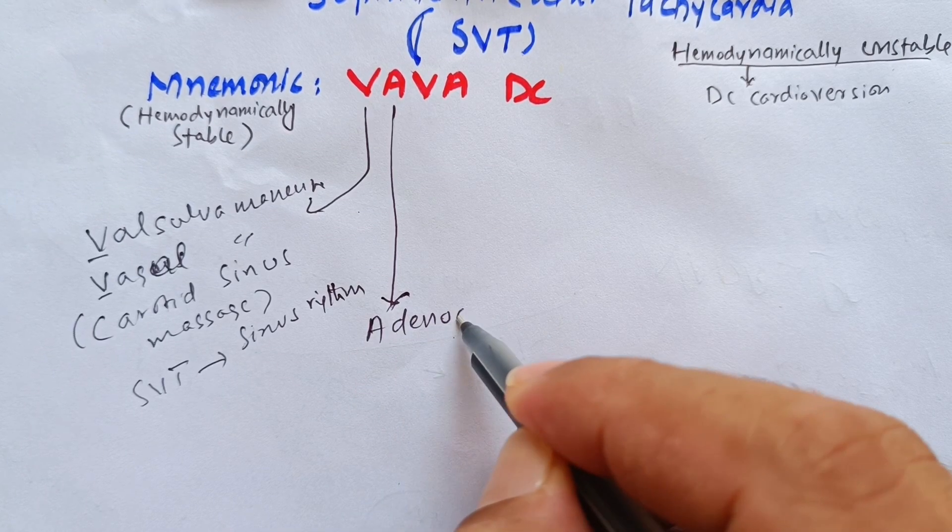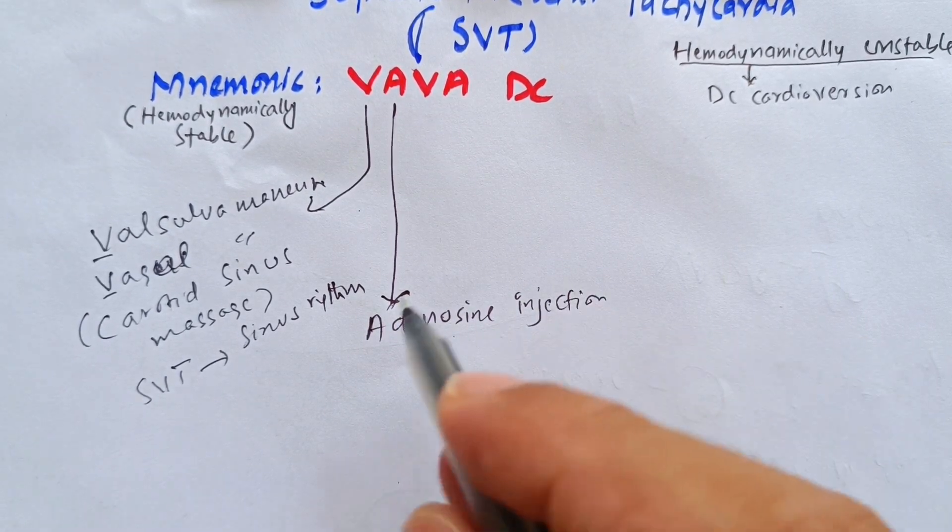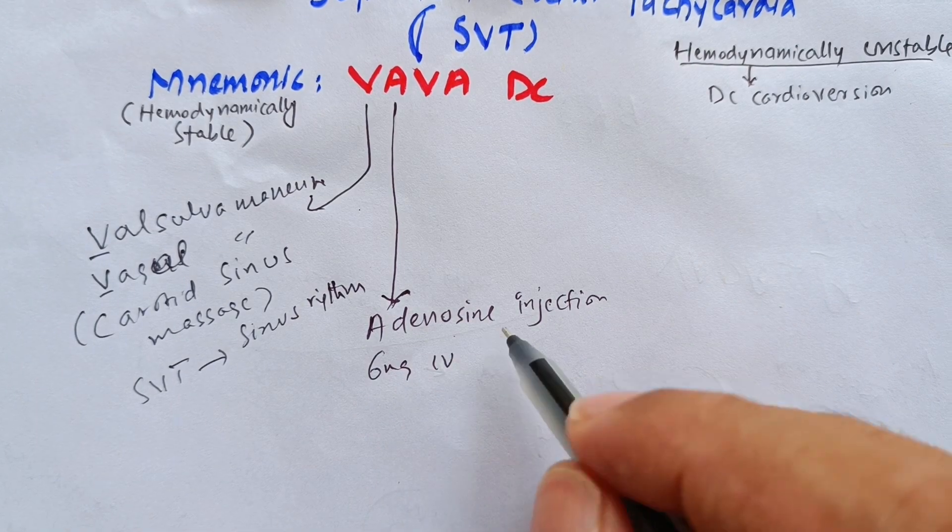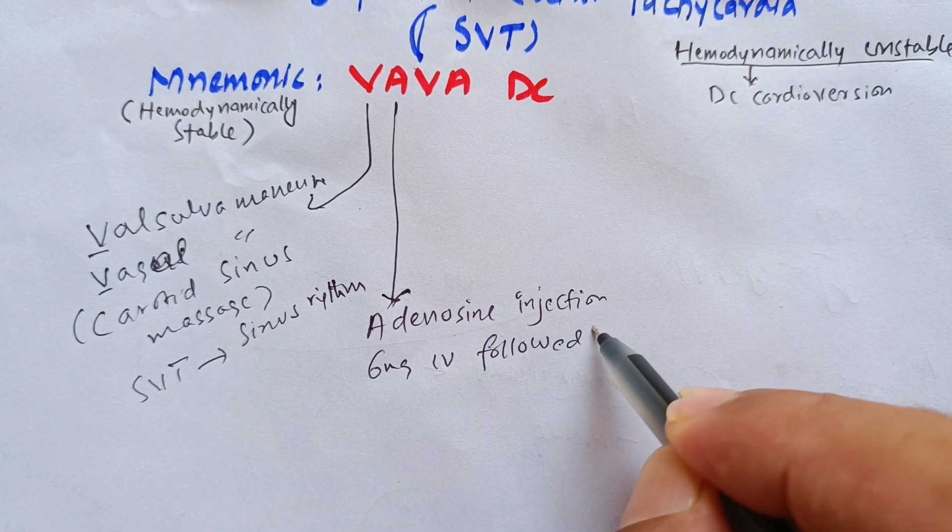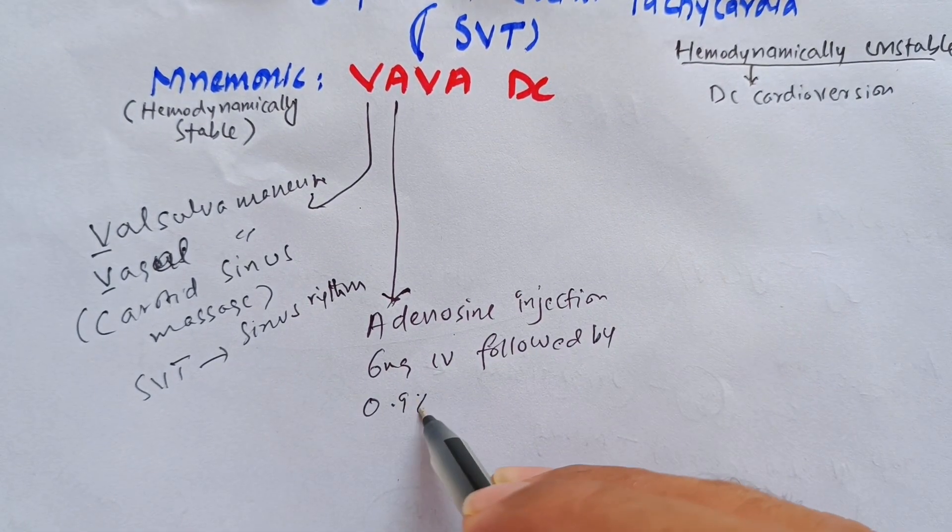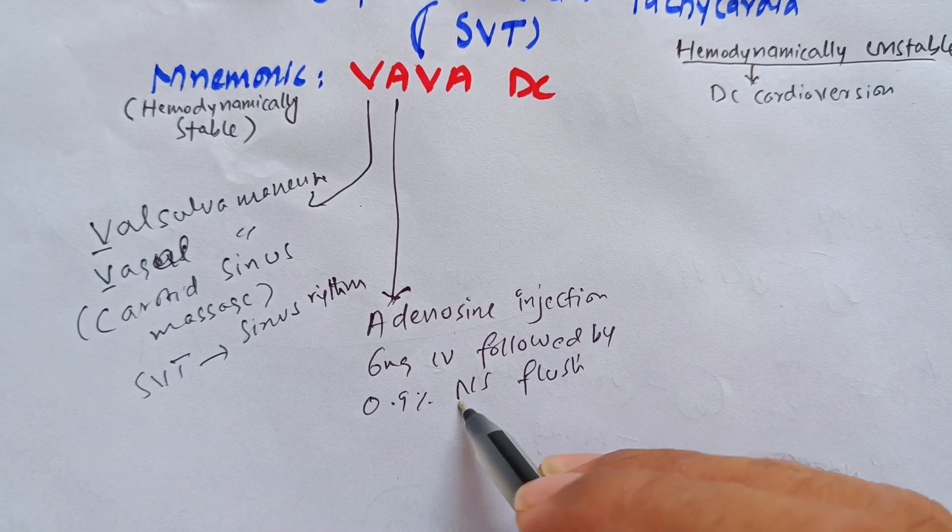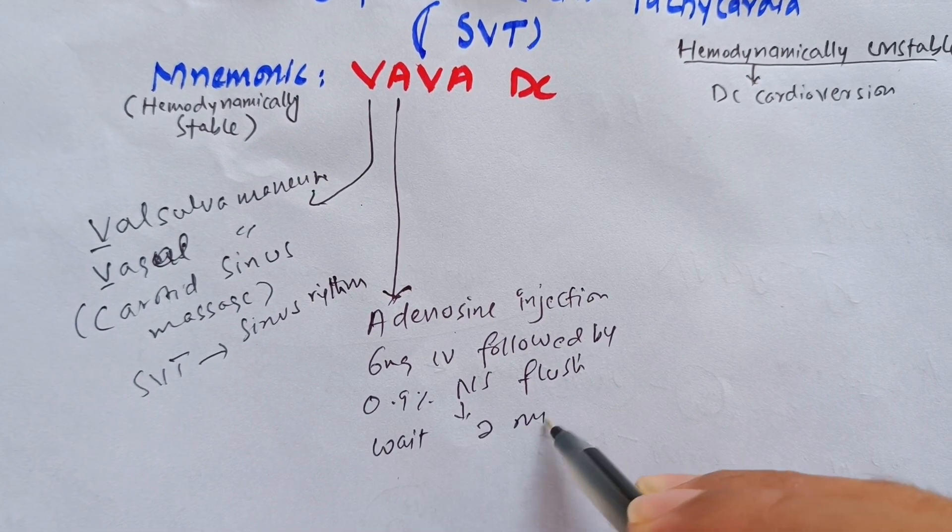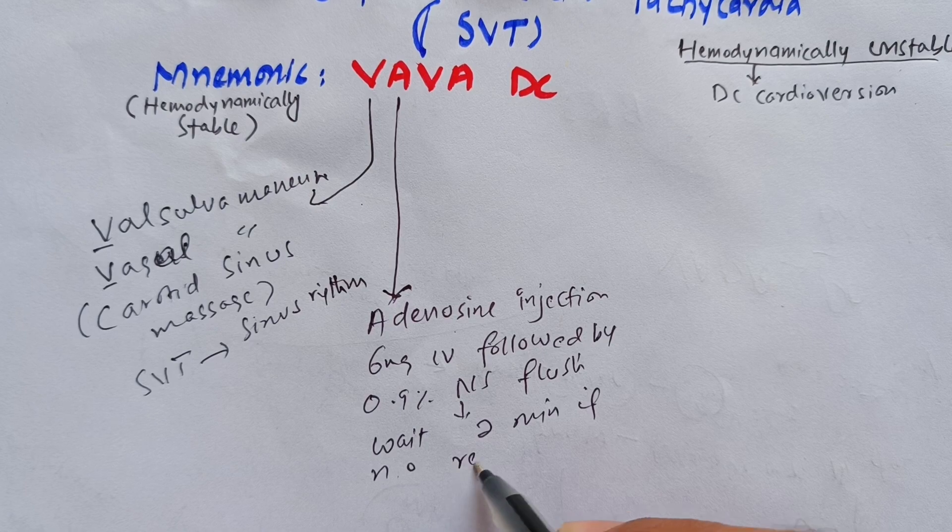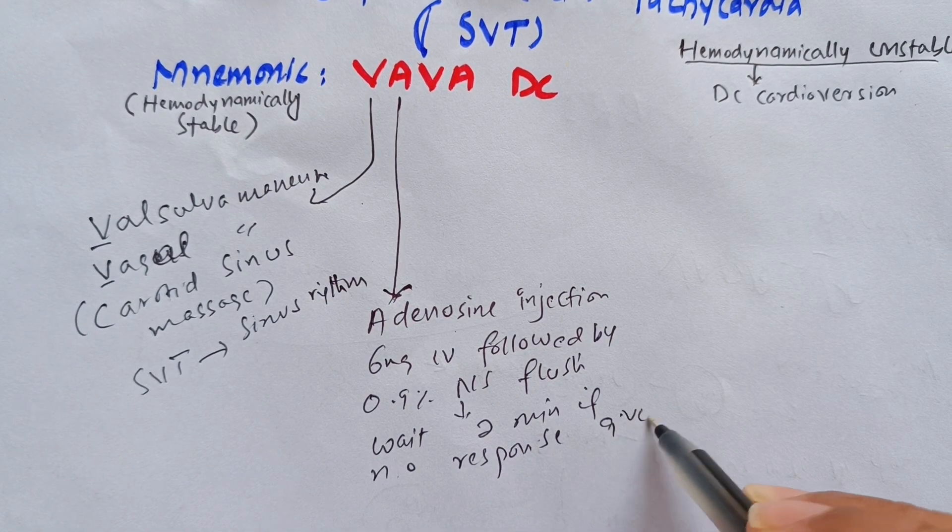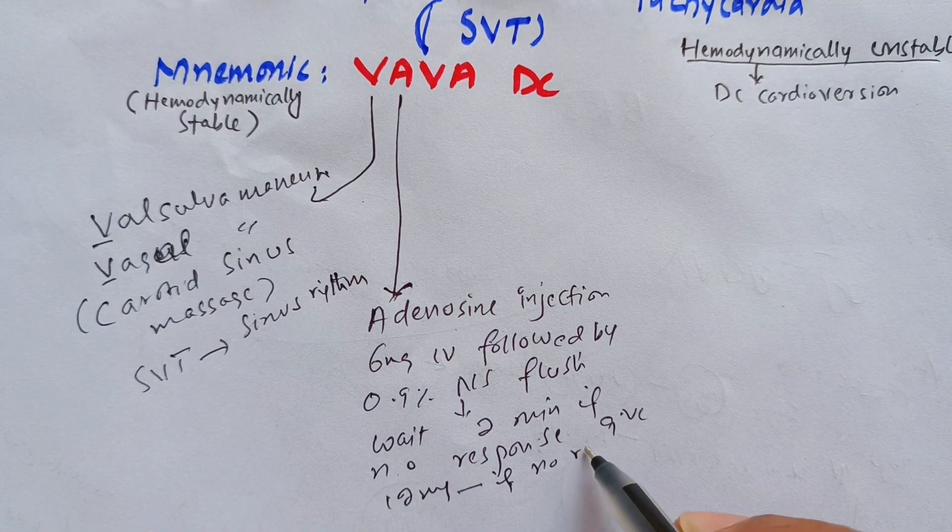A stands for adenosine. Adenosine injection 6 mg IV followed by 0.9 percent normal saline flush. We will wait for two minutes. If there is no response, then we will give 12 mg IV.